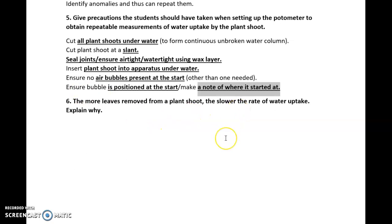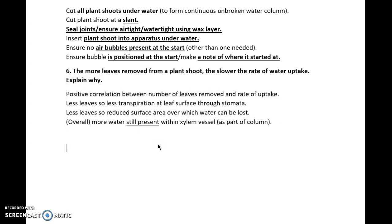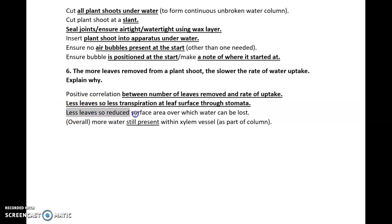The more leaves removed from the plant shoot, the slower the rate of water uptake. Explain why. This is quite an interesting question. It's quite an application-y question. There is a positive correlation between the number of leaves that you remove and the rate of water uptake. The more leaves that are removed, the slower the rate of water uptake will be. If you have less leaves, there will be less transpiration at the leaf surface through the stomata, obviously. Less leaves, less stomata, less transpiration. Less leaves, again, means less surface area over which water can be lost, more will be retained.